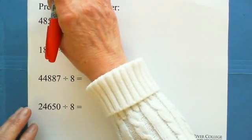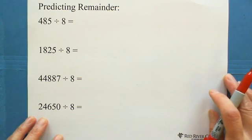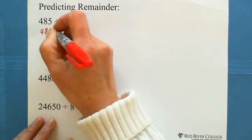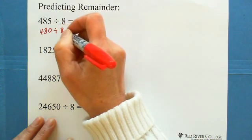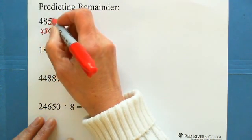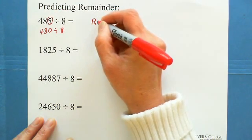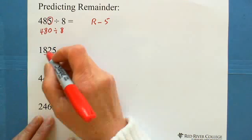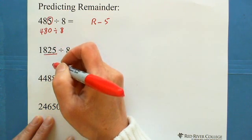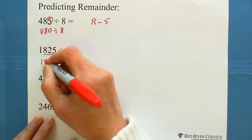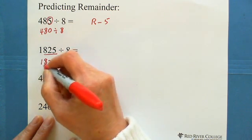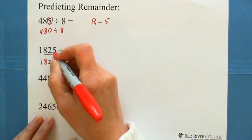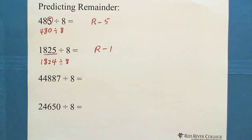Predicting remainders for division by 8 follows the same idea: find the closest number divisible by 8. For 485 divided by 8: 480 is divisible by 8, because 6 times 8 is 48. So 485 has 5 more than 480, giving a remainder of 5. For another example with last three digits 825: 824 is divisible by 8, and 825 is 1 more than 824, so the remainder is 1.